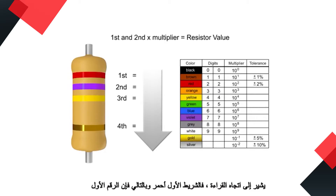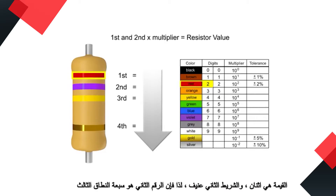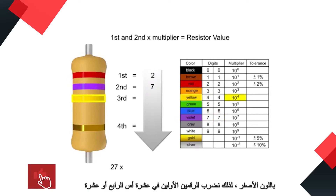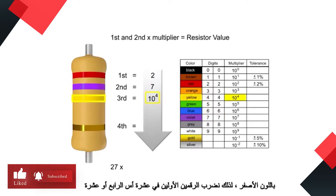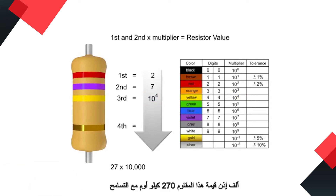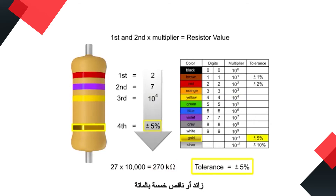The first band is red, so the first digit value is two. The second band is violet, so digit two is seven. The third band is yellow, so we multiply the first two numbers by ten to the fourth, or ten thousand. Thus the value of this resistor is two hundred seventy kilo ohms with a tolerance of plus or minus five percent.